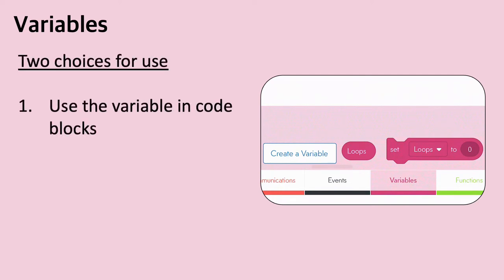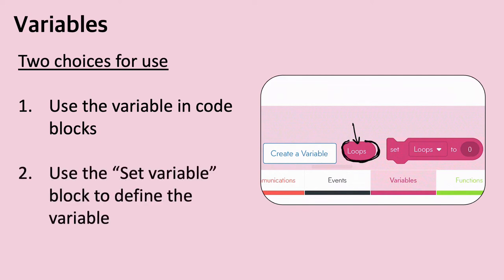The first way is as a number. I created this variable called 'loops,' and because it has curved sides, we know it can fit into operators the way any other number might. The second thing we can do is use a coding block called 'set variable' to decide what number we want to give this variable. It could be set to zero, any other number, or we could actually code for what it should be set to.